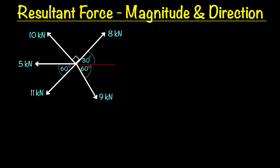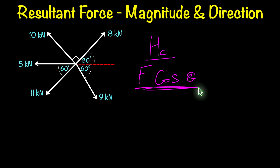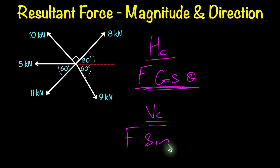I'm going to show you what I believe to be the easiest method to find the magnitude and direction for the resultant force when we have a concurrent force system. For this method, something very important to note is we're going to maintain the system where for our horizontal force component (HC), we use force × cos(angle), and for our vertical force component (VC), we use force × sin(angle). That will remain the same in this method.